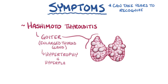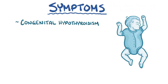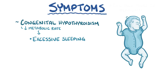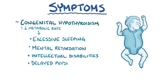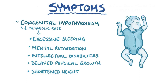Babies with congenital hypothyroidism will have symptoms related to the decreased metabolic rate like excessive sleeping, but if the condition isn't detected quickly enough, they're at risk for irreversible intellectual disabilities, as well as delayed physical growth and shortened height because of the role of thyroid hormones in brain and sympathetic nervous system development.